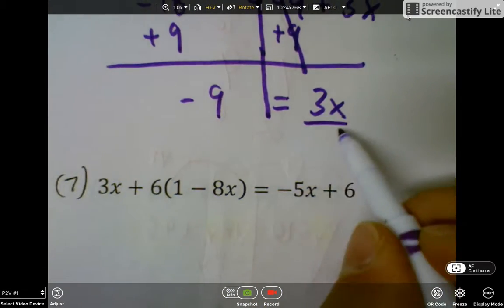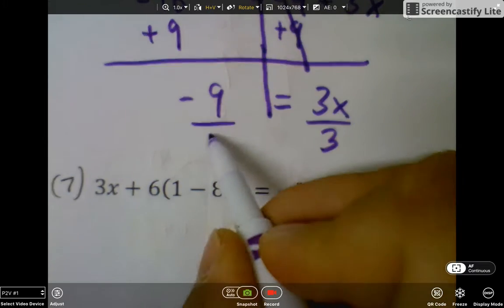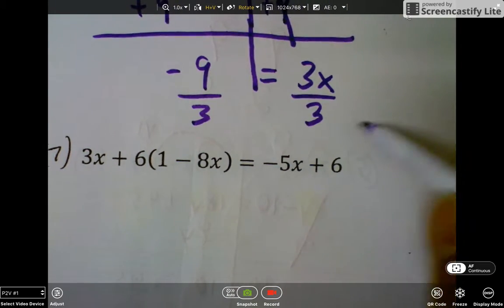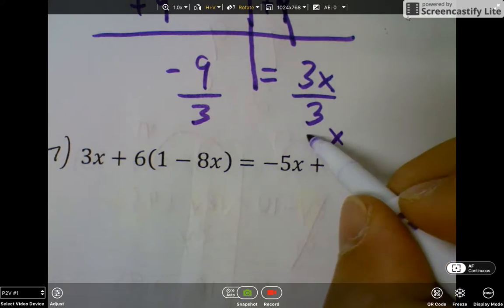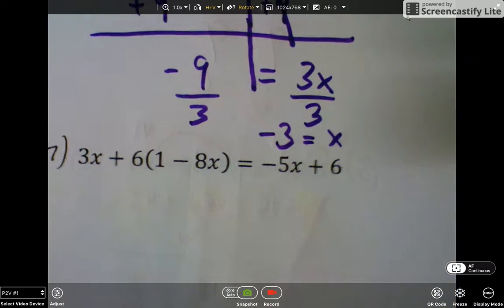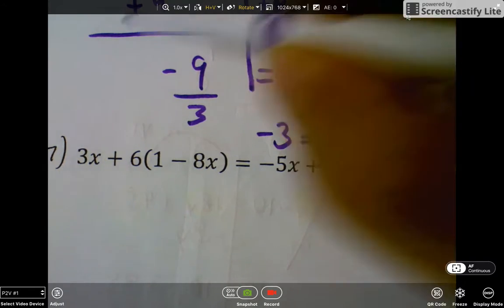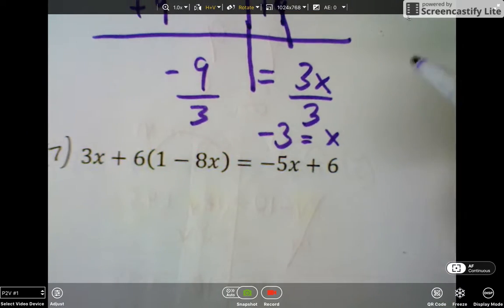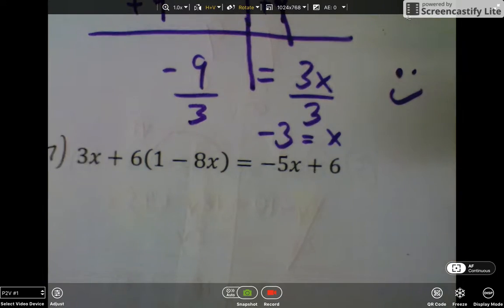And then the last step is to divide each side by 3, divide by 3, and I'm left with x equals negative 3. And that makes me very happy.